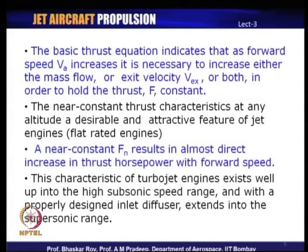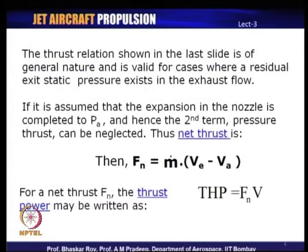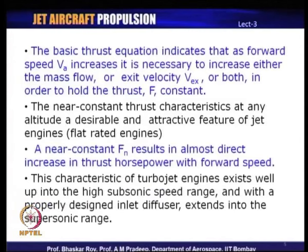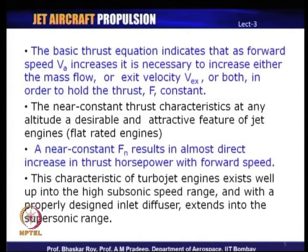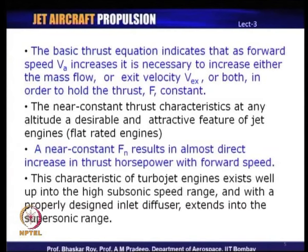If thrust is held constant and flight velocity is increased, thrust power will go up with forward speed, resulting in higher and higher thrust power. This characteristic of the turbojet engine is available at high subsonic speed ranges and, with a properly designed inlet diffuser, extends well into the supersonic range. In the supersonic region, jet engines are often equipped with afterburners, which straightforwardly give more thrust.